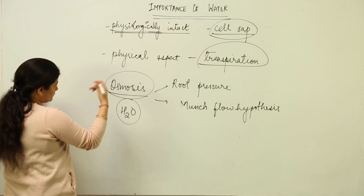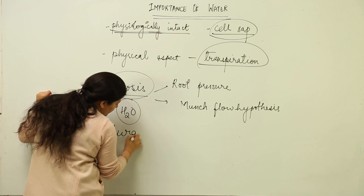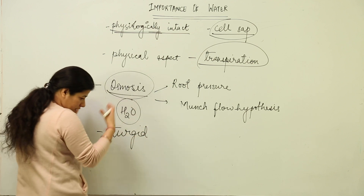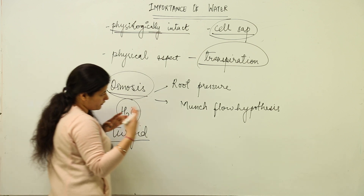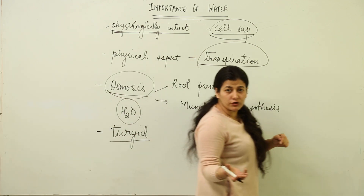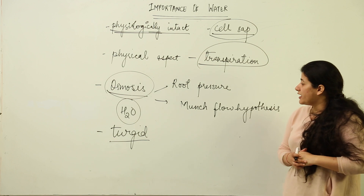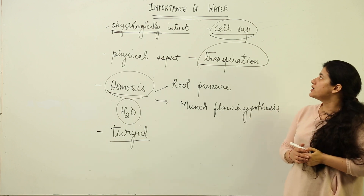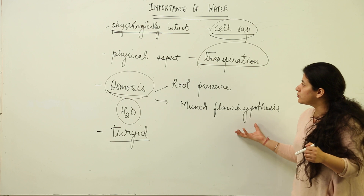Apart from this, water maintains the cells turgid, due to which the leaves have their shapes maintained and they are facing the sun, because of which photosynthesis is taking place. The plants do not undergo wilting. So there is lots and lots of importance of water.